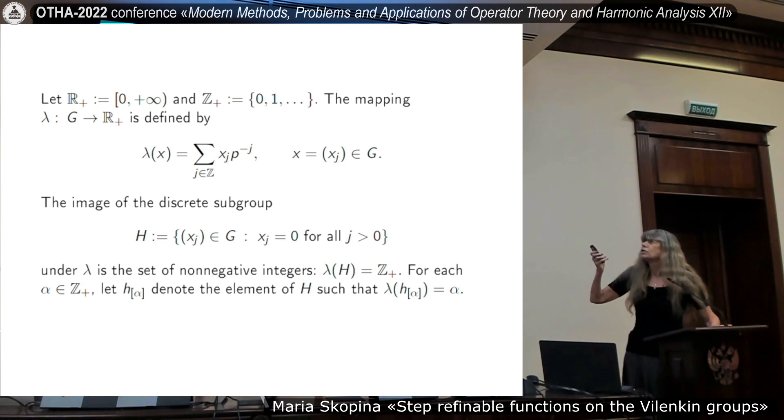A special case of Vilenkin group is Cantor group. Cantor group corresponds to p equal to 2. Cantor groups were studied earlier. And since Vilenkin group is locally-compact group, there is standardly Haar measure is introduced there, and measure is normalized such that mu of U is one. U, it looks like the interval zero, one. If we look to the semi-line, we can identify elements of group with more or less identify.